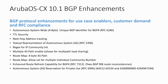Additional BGP features include enhanced route refresh capability for BGP 4 described in RFC 7313, and support of autonomous system reservation for private use described in RFC 6996.